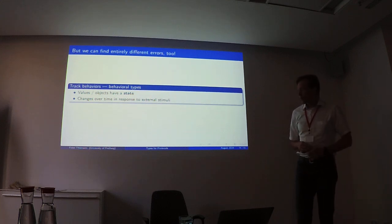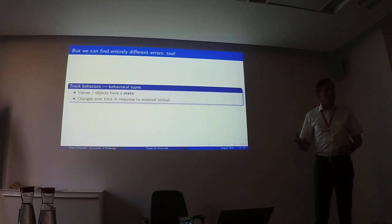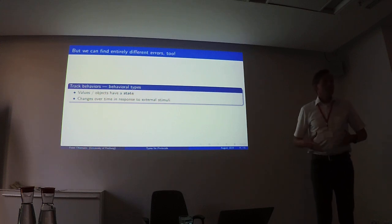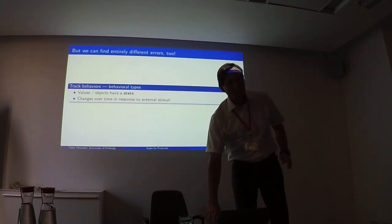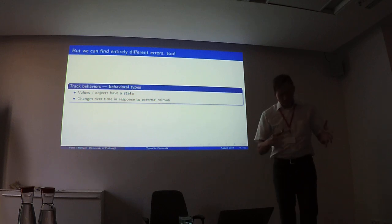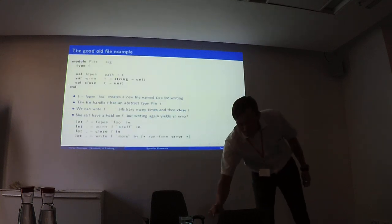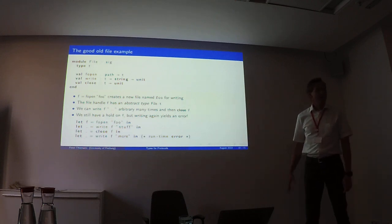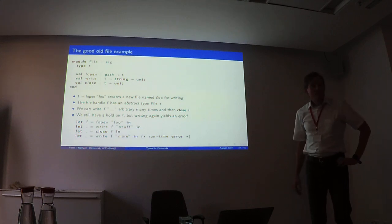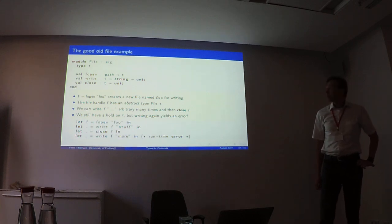The underlying idea of behavioral types is that we're talking about values or objects that have a state, and this state can change over time. The changes happen in response to some kind of stimuli, usually operations. So it's not just a property of values but a property that changes over time, attached to some stateful thing. The prototypical example — sorry, the colors on the slide were removed by the projector — is a file API.